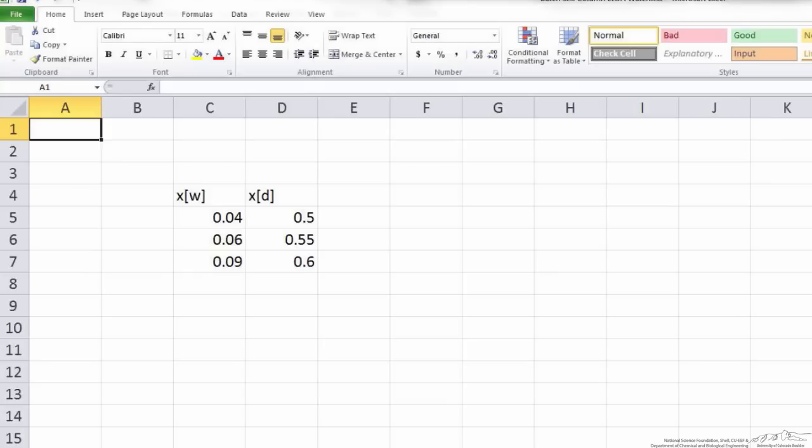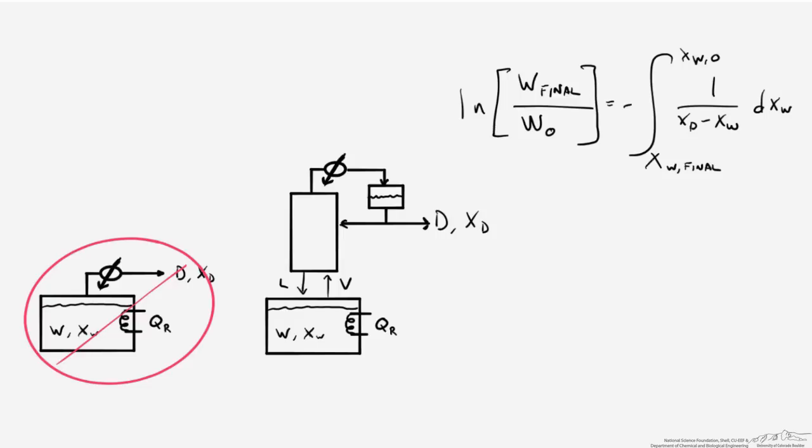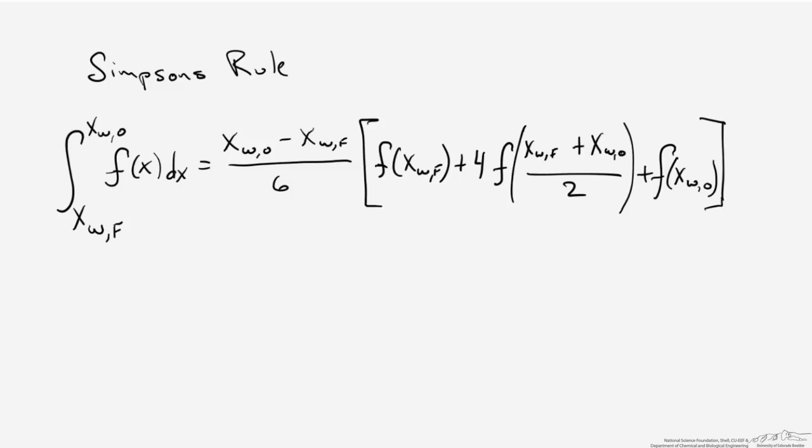Now that we've related the distillate and reboiler compositions, we want to return to the Rayleigh equation. We want to evaluate the right-hand side using Simpson's rule, a numerical integration technique. Simpson's rule evaluates the function inside the integral at three different points: the initial point, the final point, and a point directly in between. For our case, we have a function of 1/(xD - xW), so we need to evaluate this f(x) at three different points in the distillation operation.